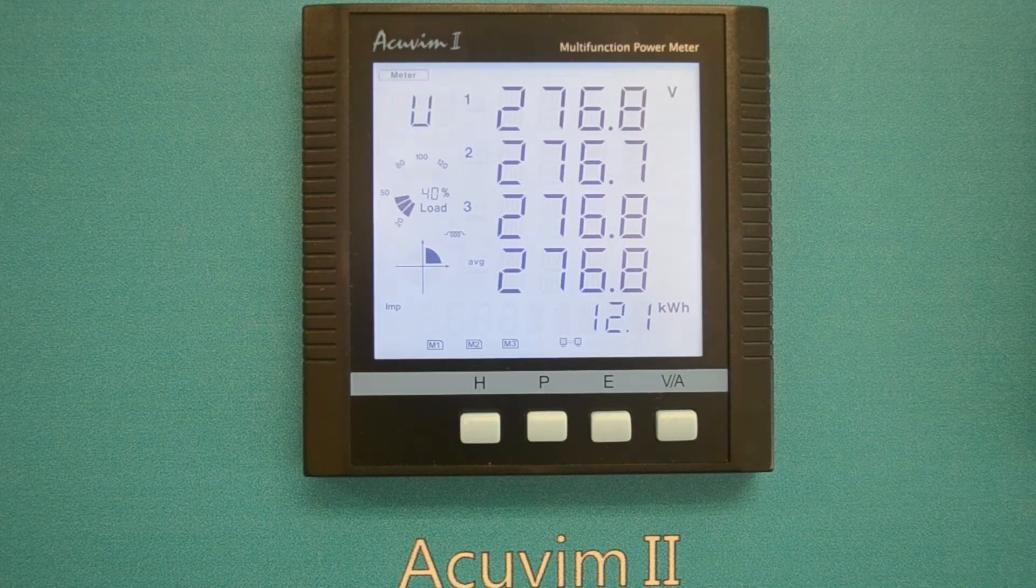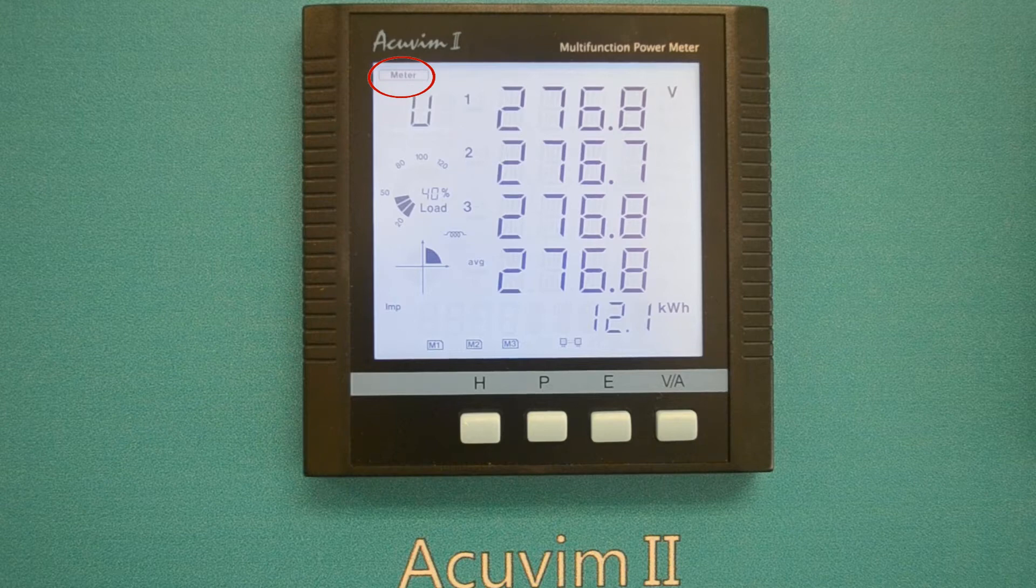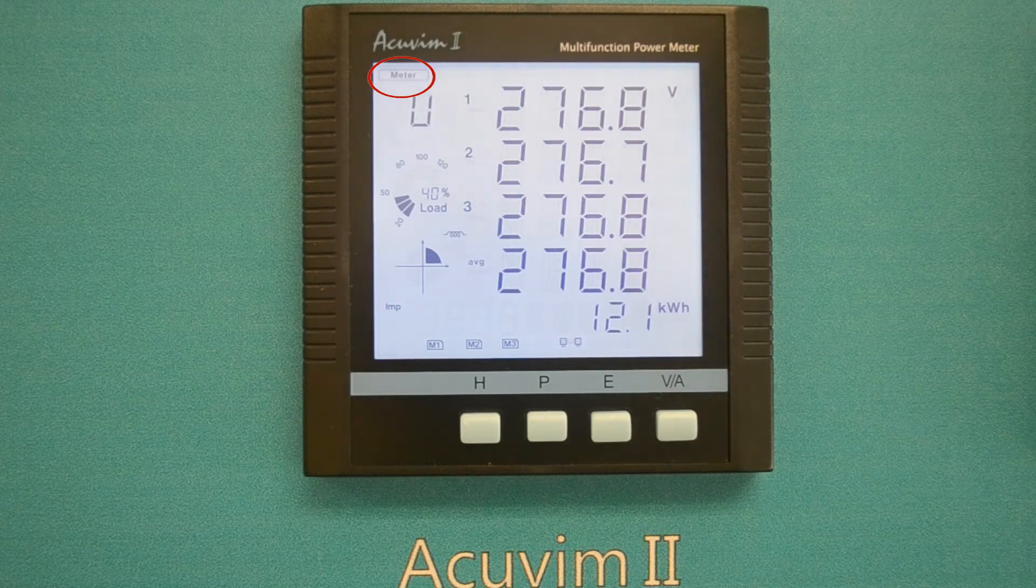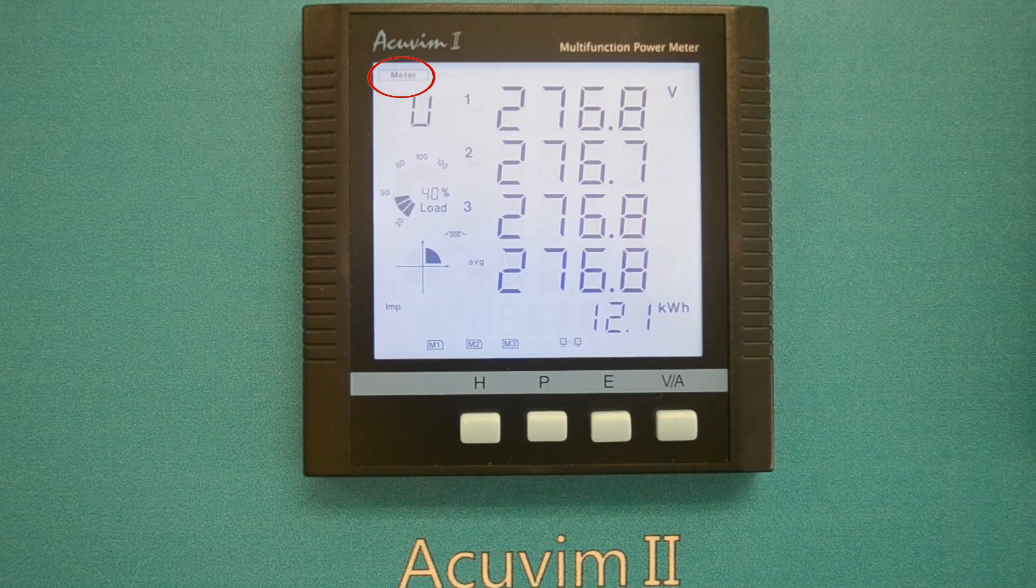When the meter is powered up, you will see the meter icon in the mode display section. This indicates the meter is now reading in meter data mode.